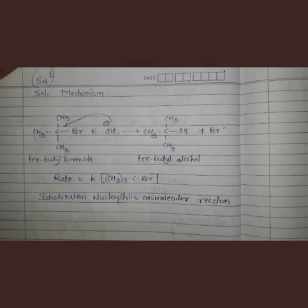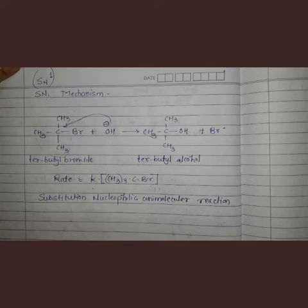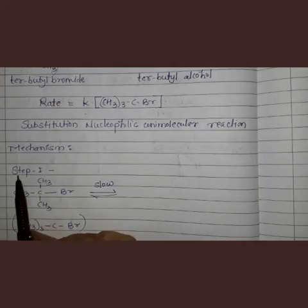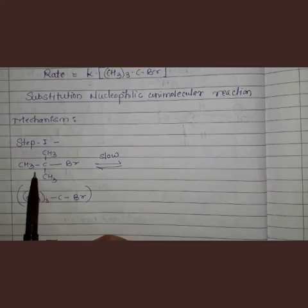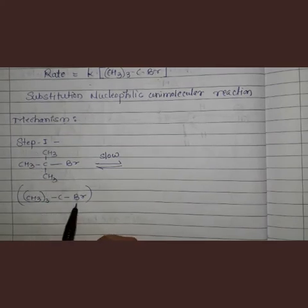The mechanism of this reaction is a two-step mechanism. SN2 was a one-step reaction and SN1 is a two-step reaction. Of these two steps, the first step is slow and reversible. The slow step is always the rate-determining step, and the subsequent step is the fast step. Let us see the mechanism.